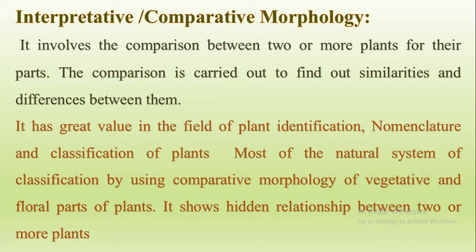For taxonomical studies, comparative morphology is most important because it gives the comparison — similarities and differences — between different plants. Most of the natural systems of classification consider the comparative morphology of vegetative and floral parts of the plants. It also shows the hidden relationship between two or more plants.